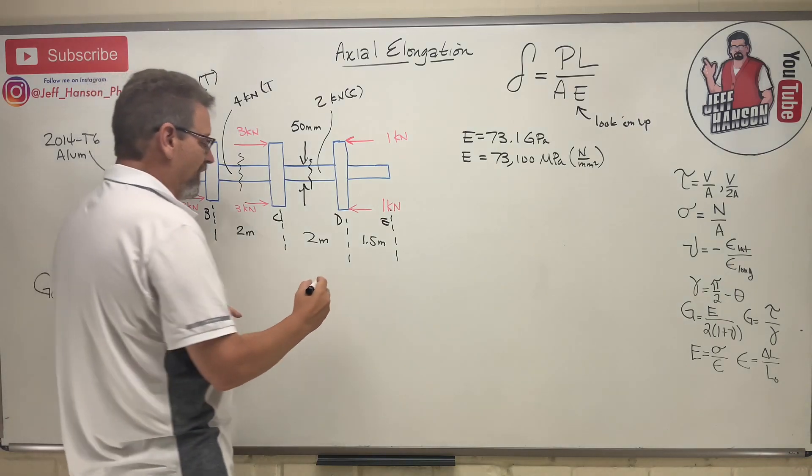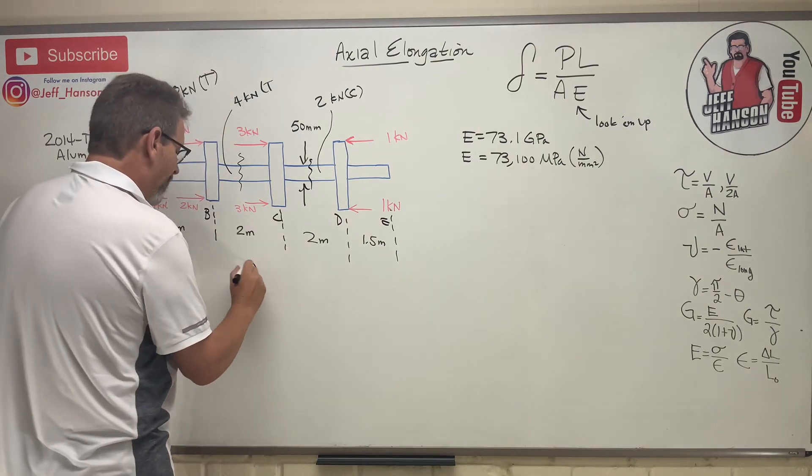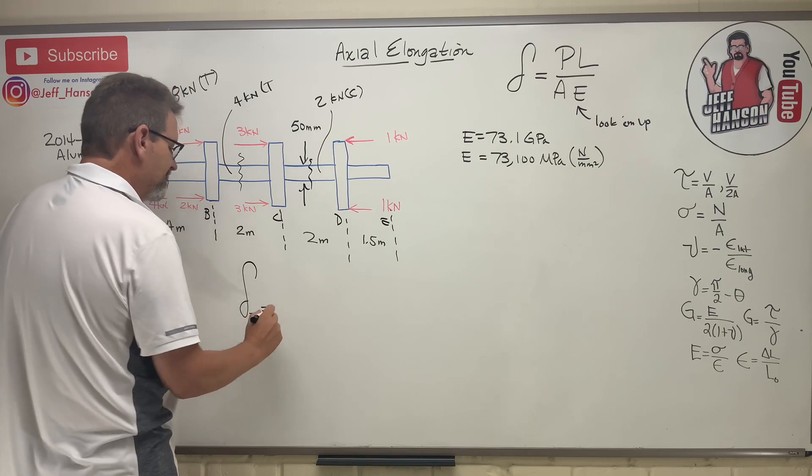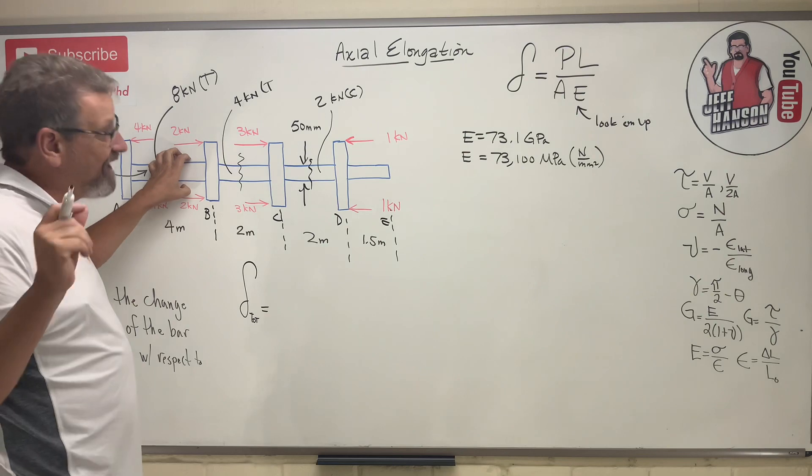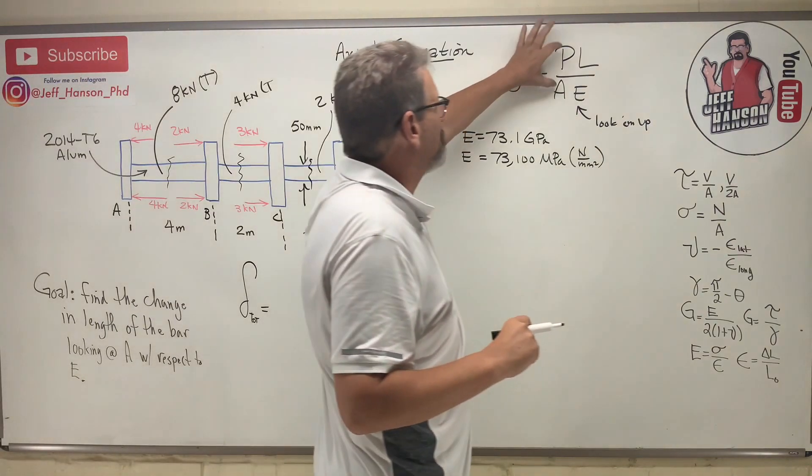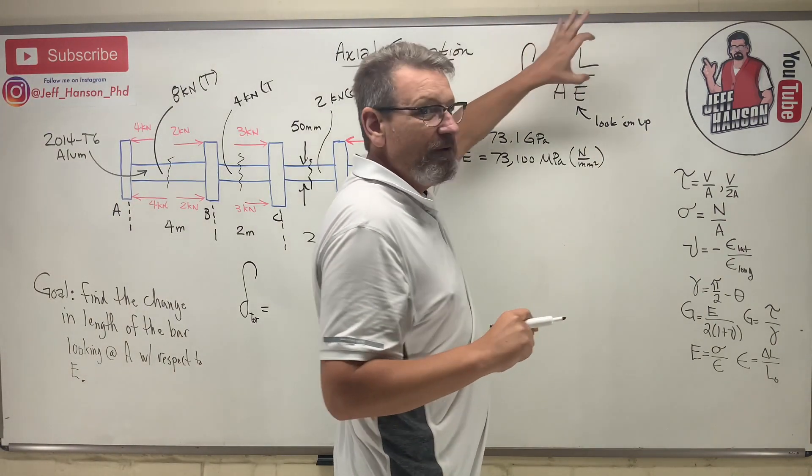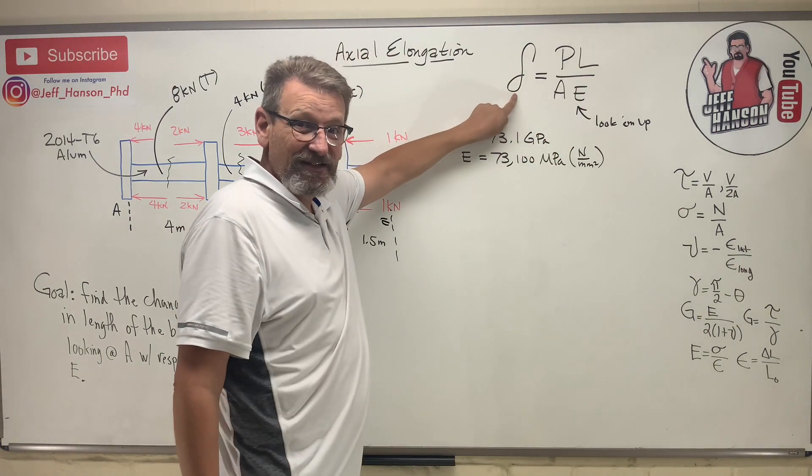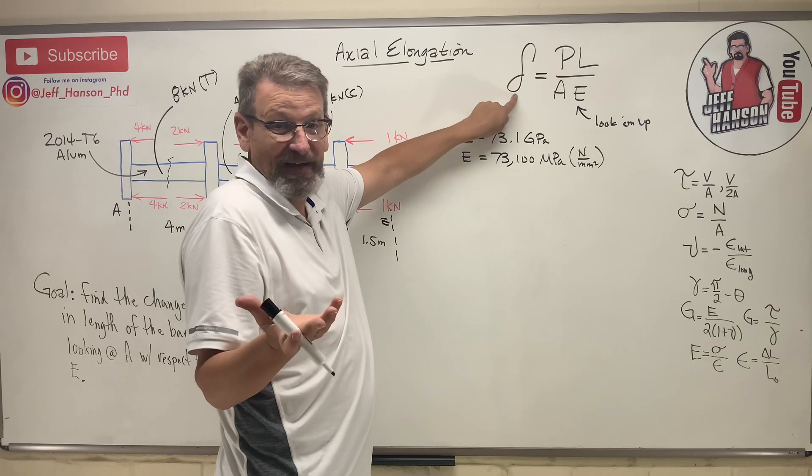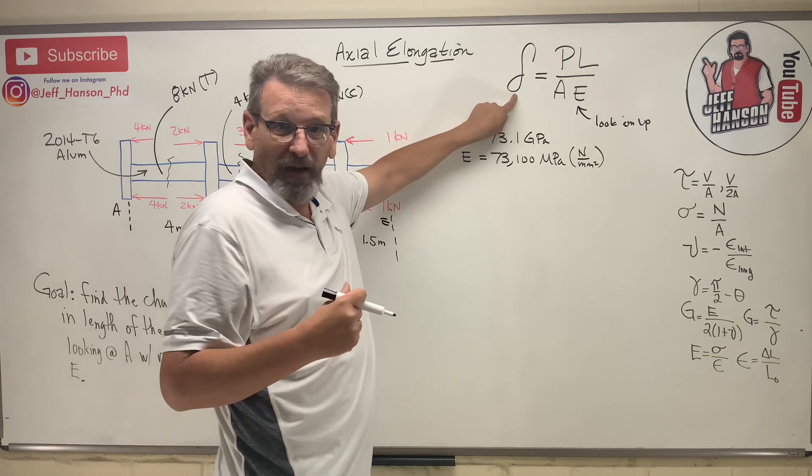So delta total is equal to - I'm going to do this one first and I'm going to be really careful. When you get these big equations with a whole lot of variables in them, you got to be really careful with units. Delta is a distance - it's a change in length. Let's make it in millimeters.